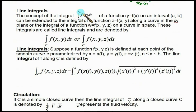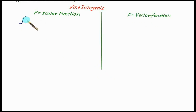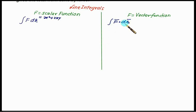Normally, a line integral has to be solved for two types of functions: one is called a scalar function and one is called a vector function. The line integral is classified into two categories based on whether the given function is scalar or vector. For a scalar function, we want to find the integral of f dr, where f can be written as, for example, x squared plus 2xy — there are no i and j terms, so it is a scalar function.